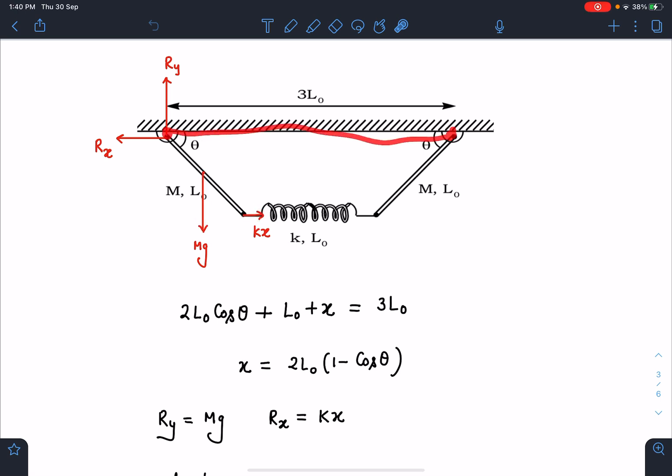Mg is acting and here it is kx. So first thing is we can equate these lengths. This will be L₀ cos θ and from other side also L₀ cos θ, and this will become L₀ plus x. X is the overall extension in the spring. So 2L₀ cos θ plus L₀ plus x equals 3L₀.